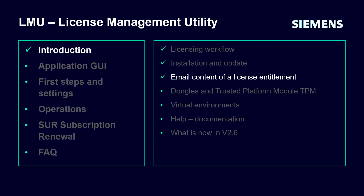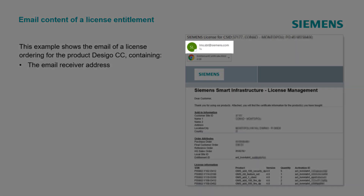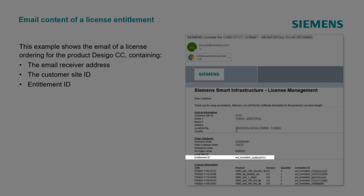As explained in the licensing workflow session, the License Management System in the headquarter automatically creates an entitlement and emails the information to the license receiver. In this example, the purchaser has ordered a Desigo CC license. As a result, the purchaser receives an email with the following information: the email receiver address, the Customer Site Identification, and the Entitlement Identification. Each license email contains one Entitlement ID, which represents the license model and the product the customer has bought with quantity.